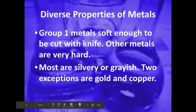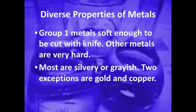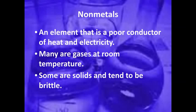Most metals are going to be a silvery or gray color. Two common examples that obviously aren't silver or gray are gold and copper. When we look at non-metals, their properties are very different — they're not good conductors. Most are gases at room temperature; things like xenon, chlorine, and neon are gases at room temperature. The few that are solids are typically going to be brittle and break very easily.